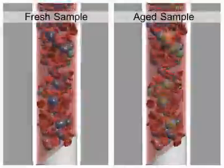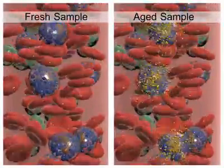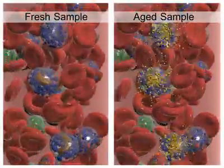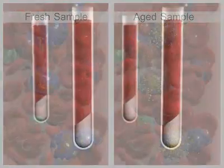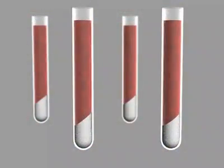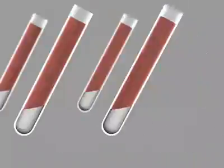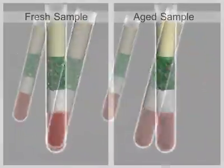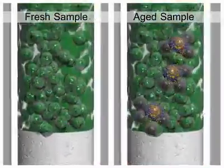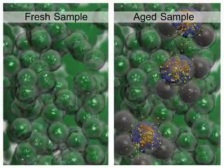When blood samples are stored for more than 8 hours, there may be degranulation of granulocytes. As a result, there is a reduction in density, and the lighter granulocytes can contaminate the PBMC layer after density gradient centrifugation.